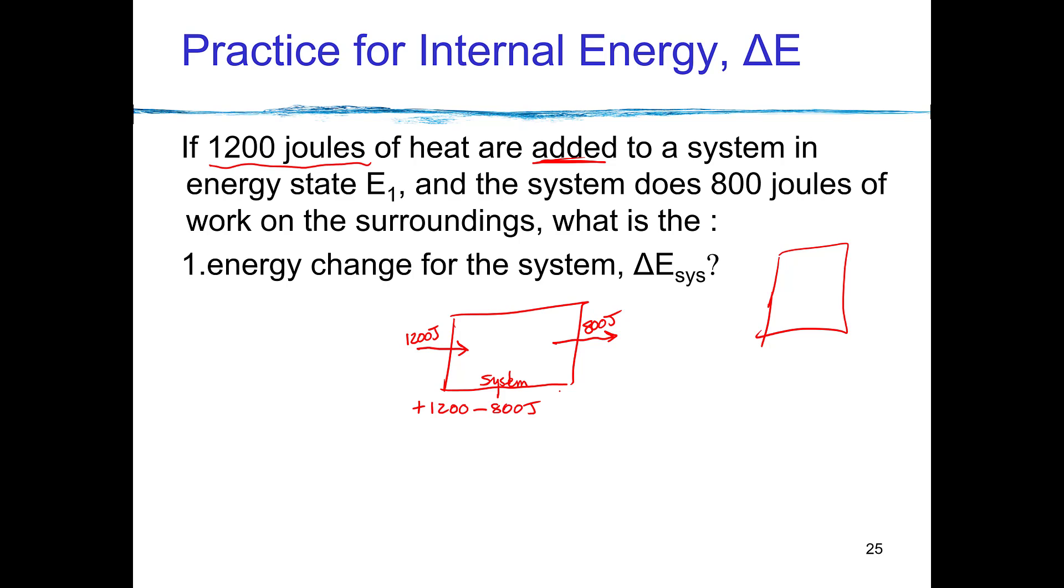Alright. And so that's going to give me, and I'm looking at delta E, right? A delta E of positive 400 joules. So whatever I had to begin with, I now have 400 more joules than I started with. Does that make sense? So that's pretty simple if you think about it.